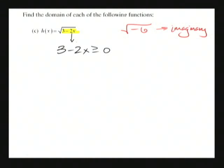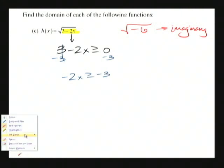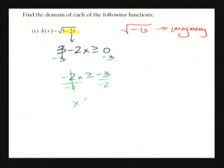Now when I solve, what am I going to get? Take away 3, I get negative 2x greater than or equal to negative 3. Now we have to be careful about this next step. We're going to divide by negative 2, and we get x less than or equal to—I've got to change the direction of the equal sign because I divided by a negative—so x less than or equal to 3 over 2.